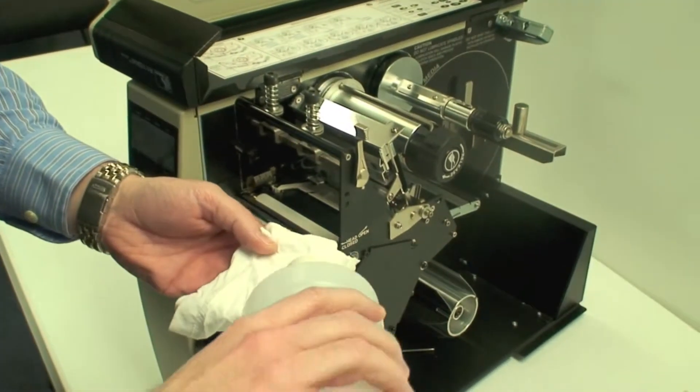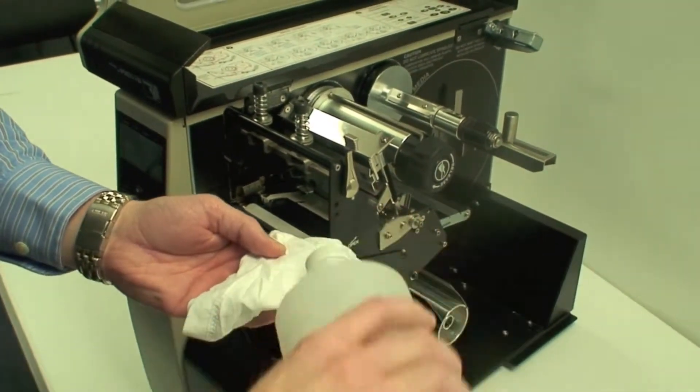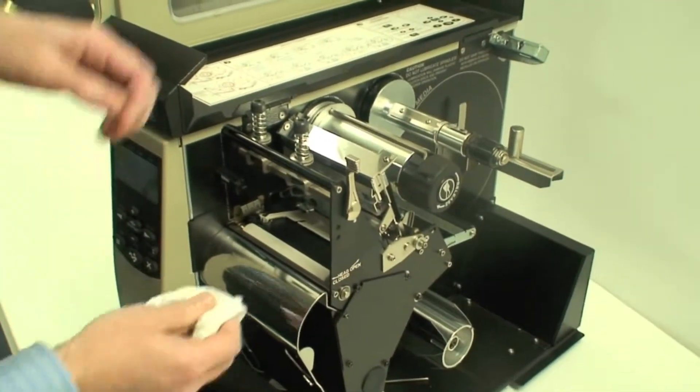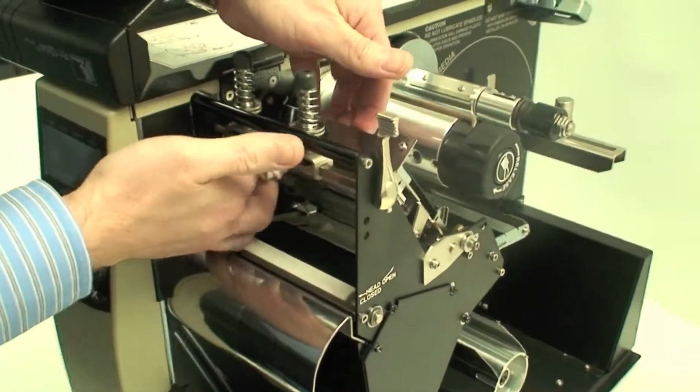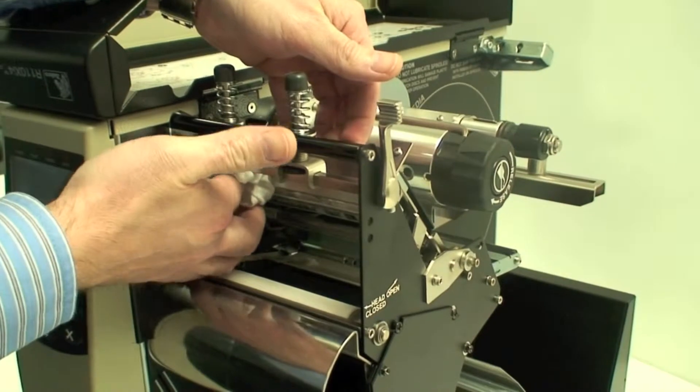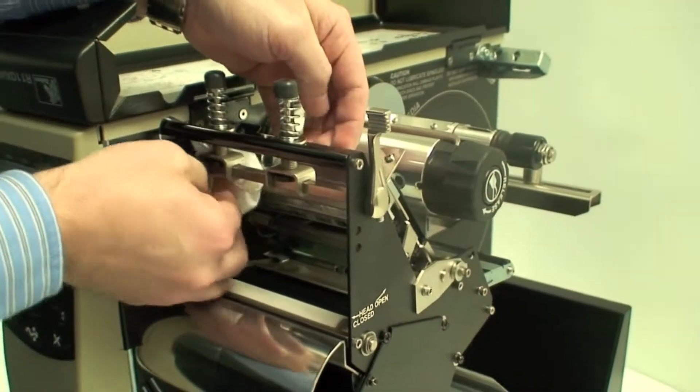You're just going to apply that to a lint-free cloth and you'll gently wipe across the elements on the print head. Basically cleaning any ribbon carbon build up or any label dust flakes on the print head.